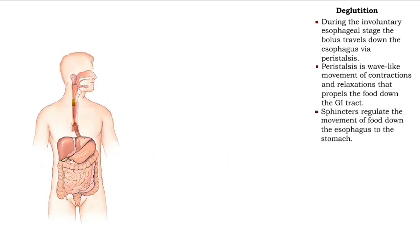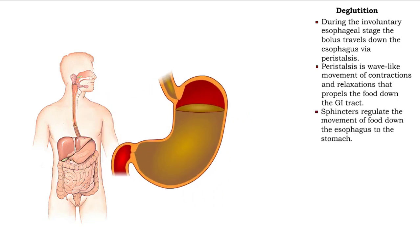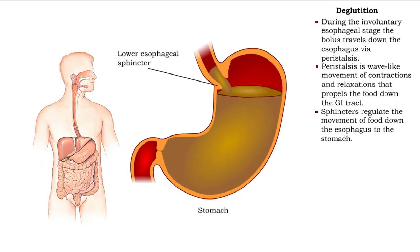Sphincters in the esophagus regulate the movement of food down the esophagus to the stomach.